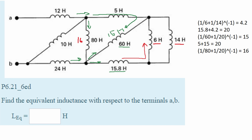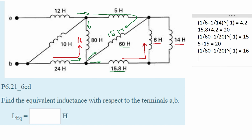Now we can see that this 16 Henry of inductance is in series with this 24 Henry of inductance, so we can add them together. If we do that we're going to get 40.